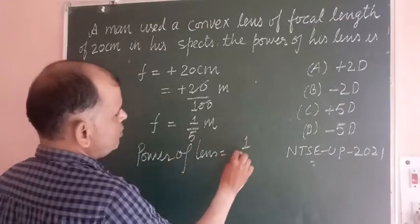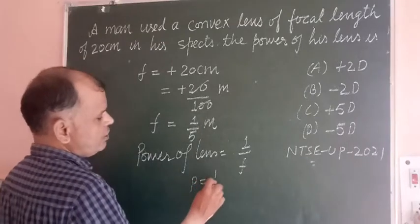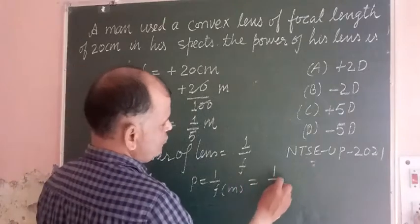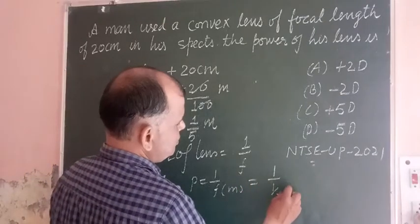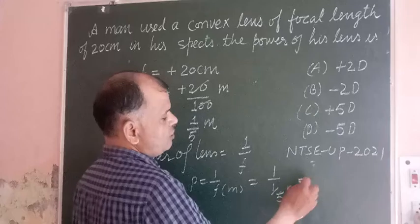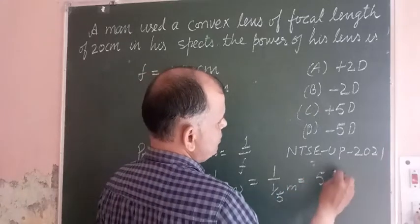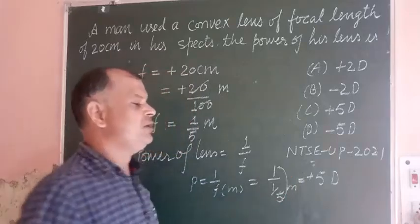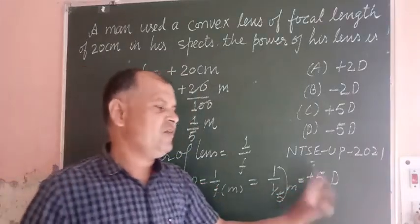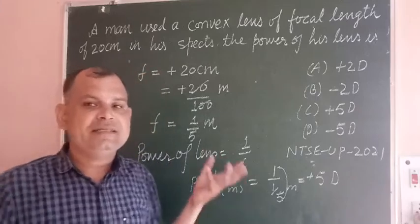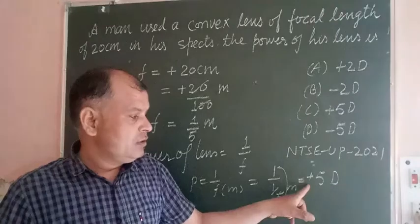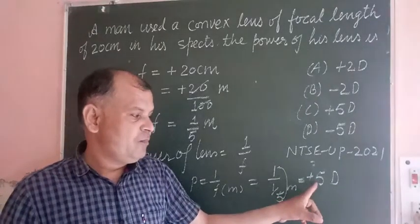This is 1 upon f in meters, so we put this value which is 1 upon 5 meter. This equals 5 diopter. This becomes plus 5 diopter because the convex lens has positive focal length, therefore its power will be plus 5 diopter.